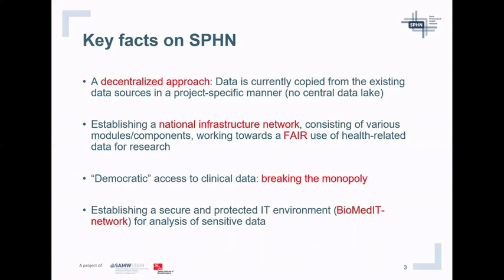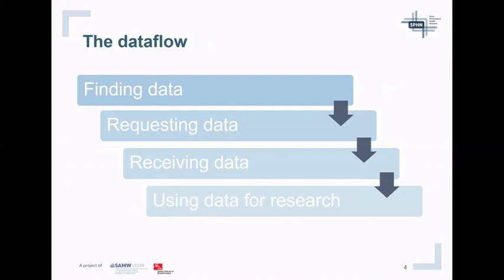Looking at the data flow from a researcher's perspective, it's fairly simple: researchers want to identify the data they can use, find it, request it, and ideally receive and use it for their research projects. But in the real world this is not as straightforward as we would wish. The Personalized Health Informatics Group, together with all collaborators and partners in the SPHN network, is working hard to streamline this process.